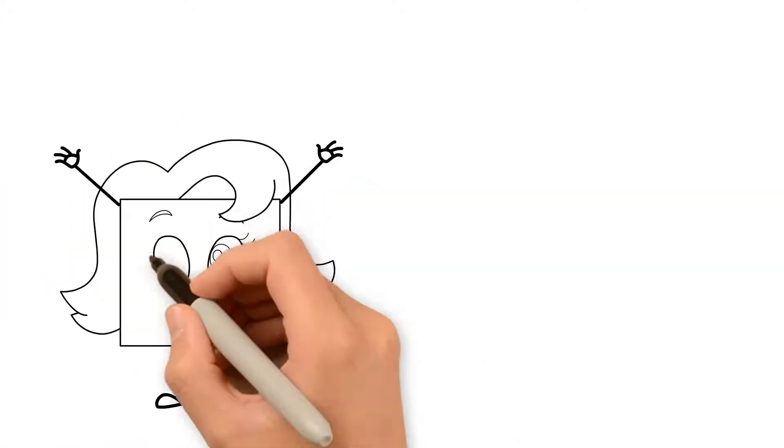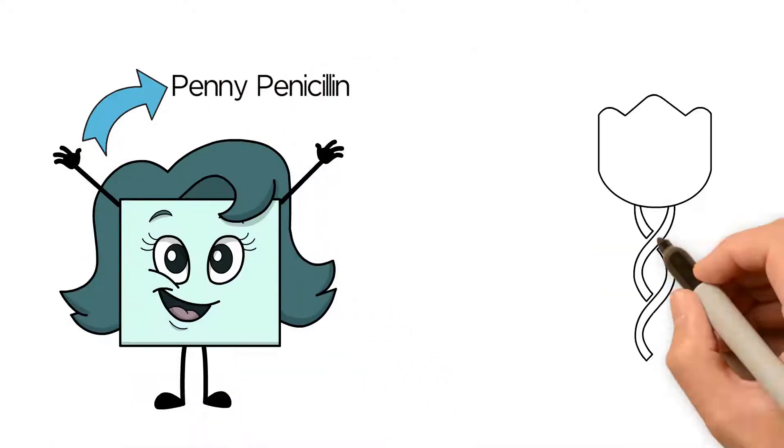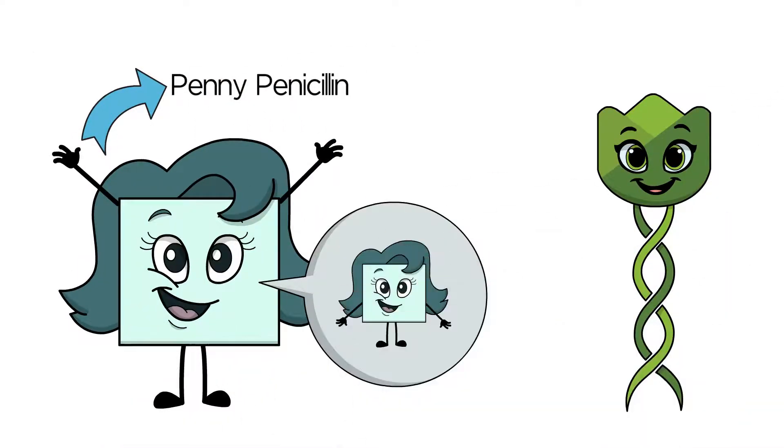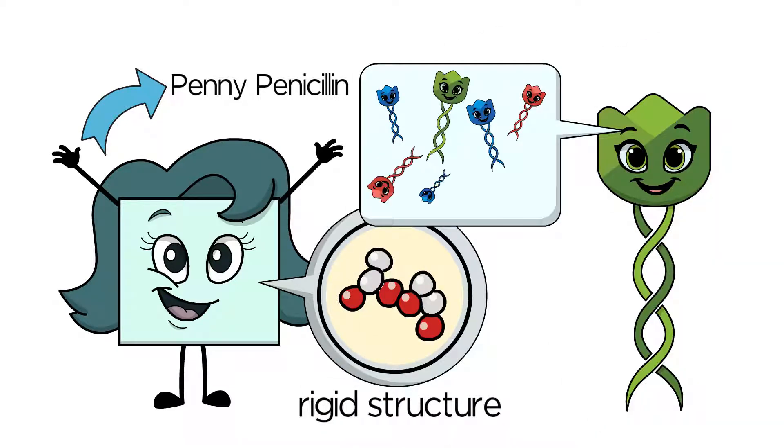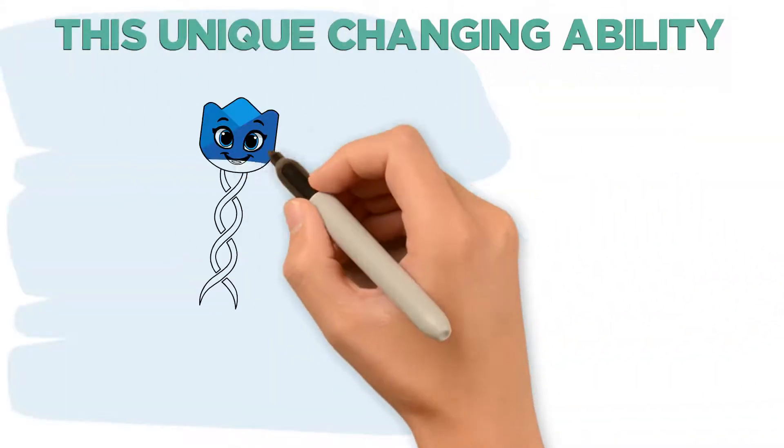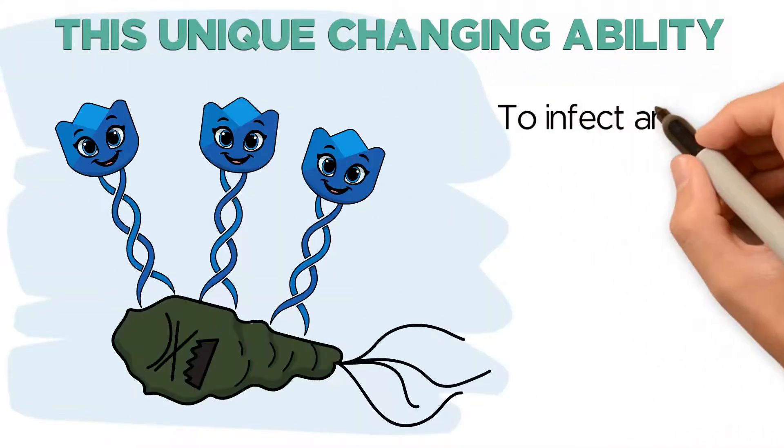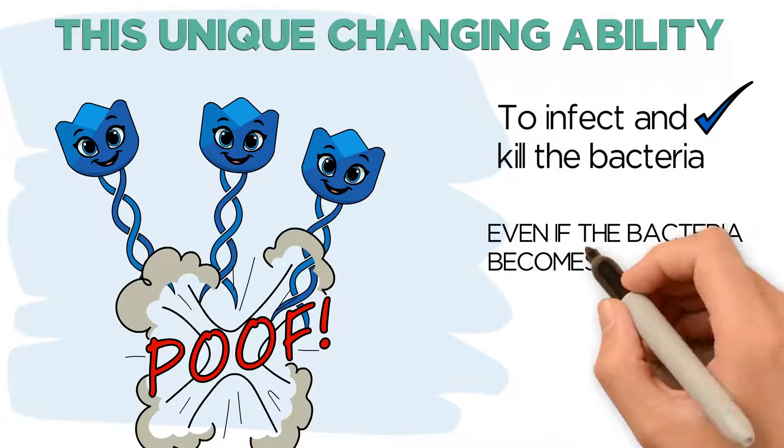Taylor's friend is Penny Penicillin, an antibiotic. Unlike Taylor, Penny has a hard time changing because of her rigid structure. Whereas Taylor can easily change. This unique changing ability allows Taylor to overcome resistance to infect and kill the bacteria, even if it becomes resistant to Taylor.